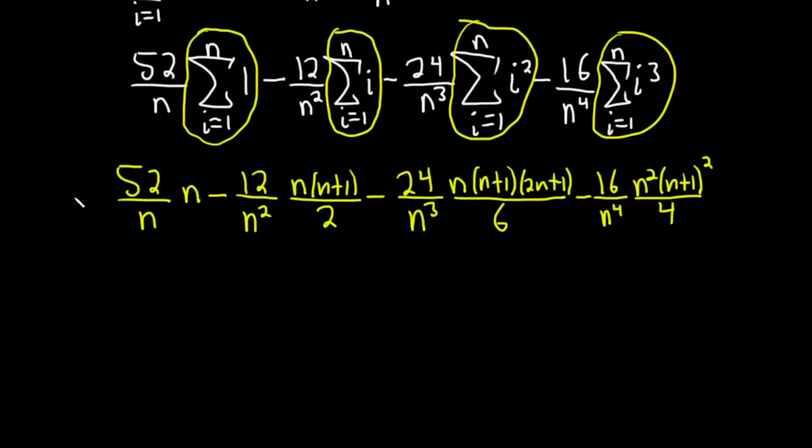Let me write the limit sign here. Limit as n goes to infinity. Now we'll take the limit. This is just going to be 52. What about here? We're going to focus on leading coefficients. In the numerator, the term of highest degree is 12n squared. In the denominator it's 2n squared. Whenever the degrees match and you're taking a limit as n goes to infinity, the answer is the ratio of the leading coefficients. So it'll be 12 over 2. Oh, it's not plus, it's minus.